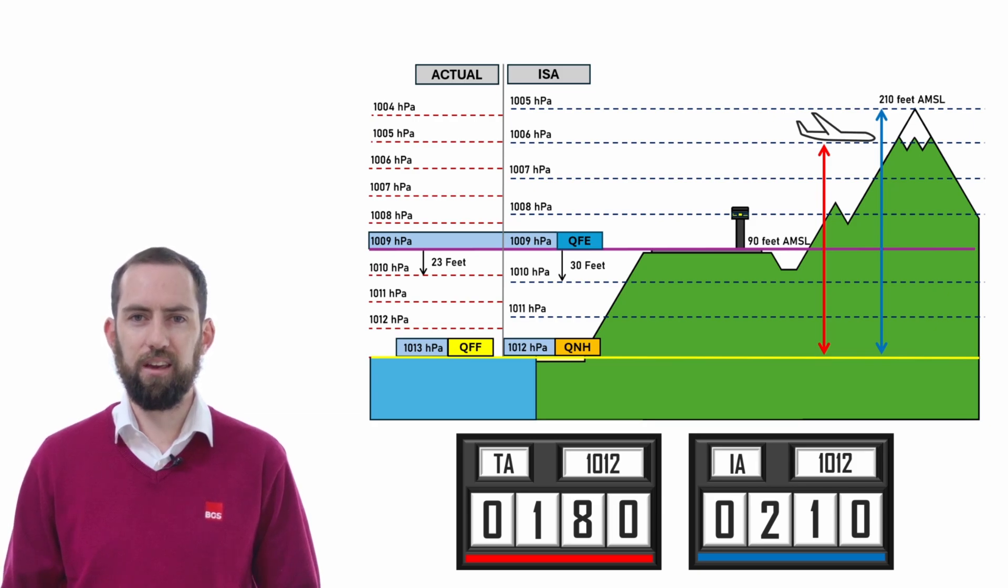According to the altimeter in the aircraft, which is calibrated to ISA and thinks that every one hectopascal drop in pressure is equal to 30 feet, the altimeter will believe that it is at 210 feet because it expects to find the 1005 hectopascal level at the peak of the mountain. The problem is that in the real atmosphere, because pressure has fallen off quicker than the ISA rate, the aircraft meets the 1005 pressure level much lower. This is clearly a dangerous scenario because the aircraft has been given a false sense of security.